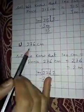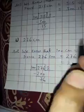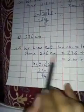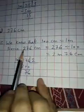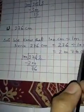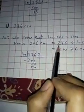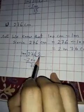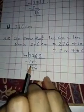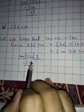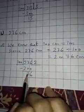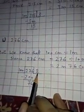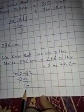In the same way, solve 276 centimeters. Again apply the same rule — we know that 100 centimeters is equal to one meter. So divide 276 by 100. 276 is not exactly divisible by 100 — no problem. Hundred twos are 200, subtract, and 76 will come. So two is your bigger unit: 2 meters and 76 centimeters.